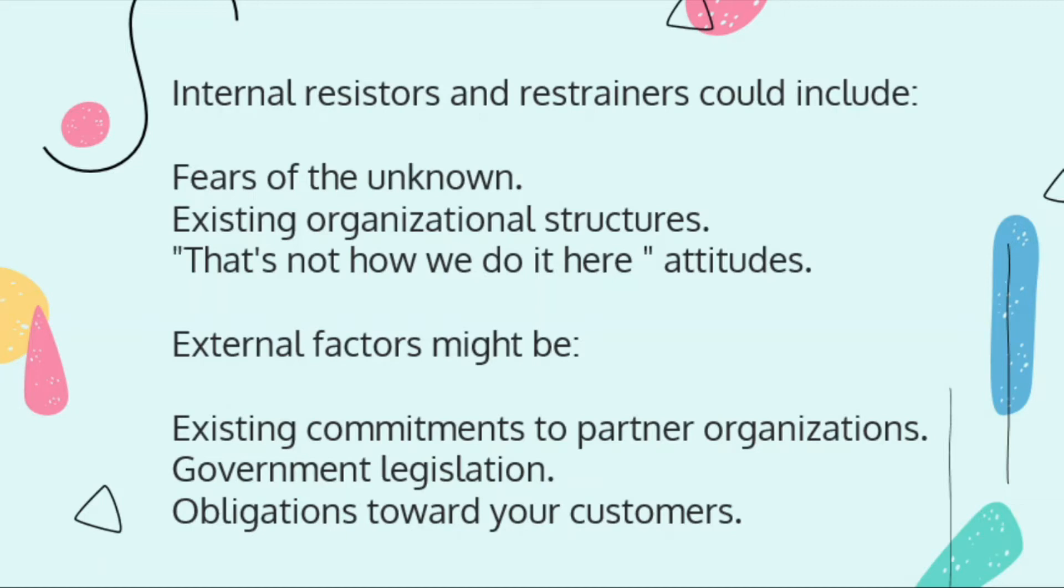Next, existing organizational structures. It's possible that when we use this high-tech new technology, we might need to reduce staff numbers, maybe reduce managers or supervisors because fewer people need to supervise. And also that's not how we do it here attitude, the older people in the company saying that's not the way we do things. External: existing commitments to partner organizations, so you might have prior commitments to other businesses or organizations. Government legislation, maybe it's not allowed in that particular country. And your obligations toward your customers.